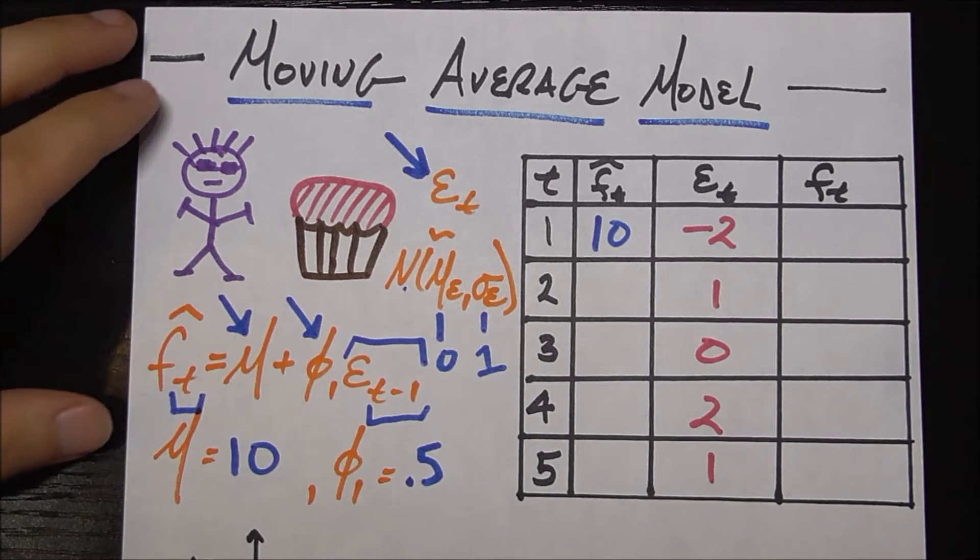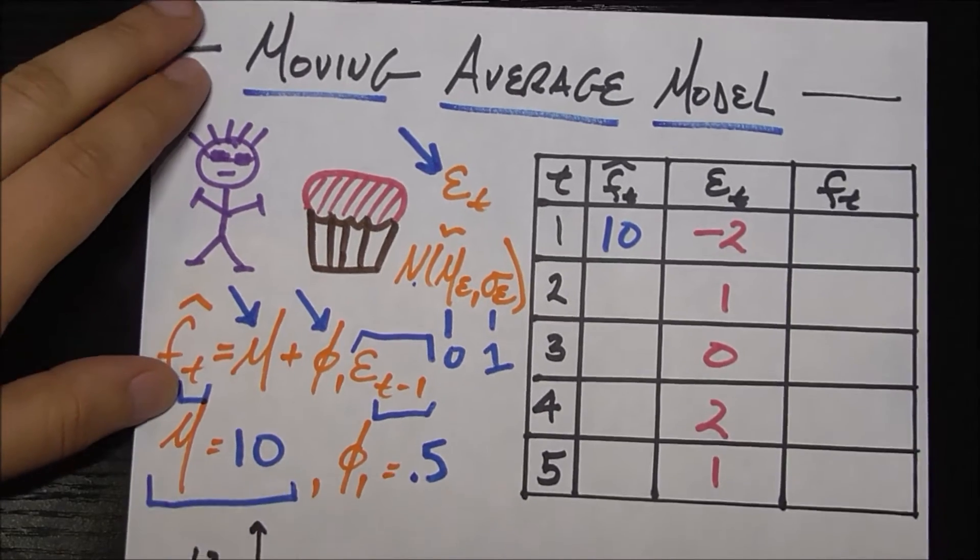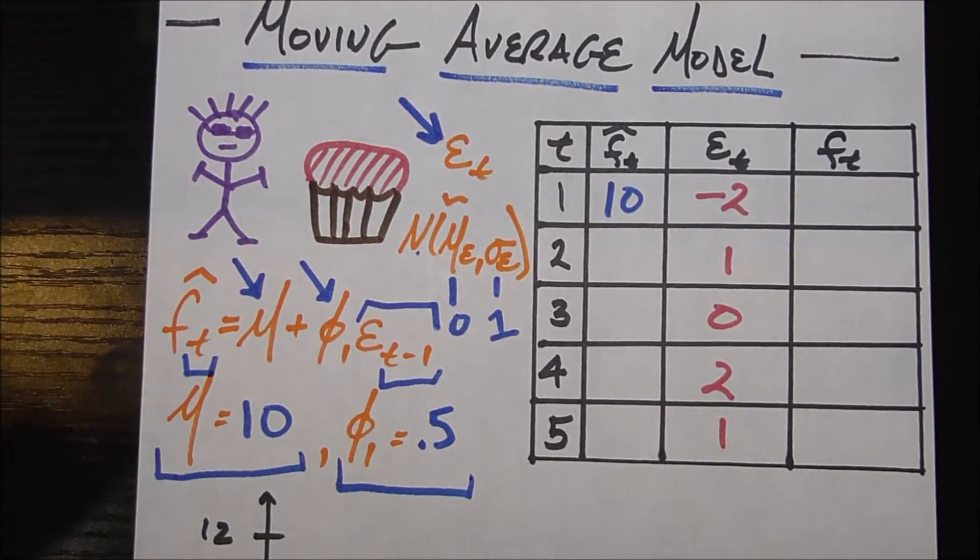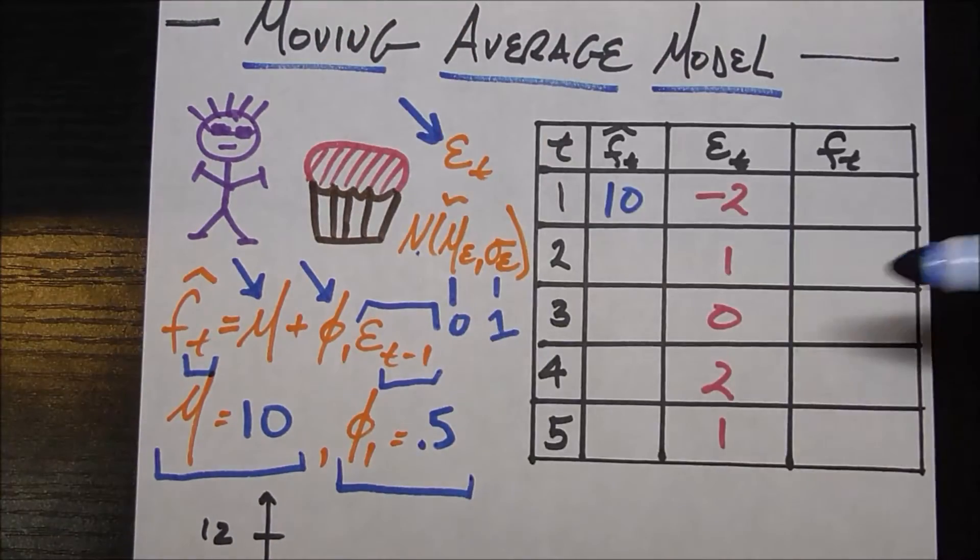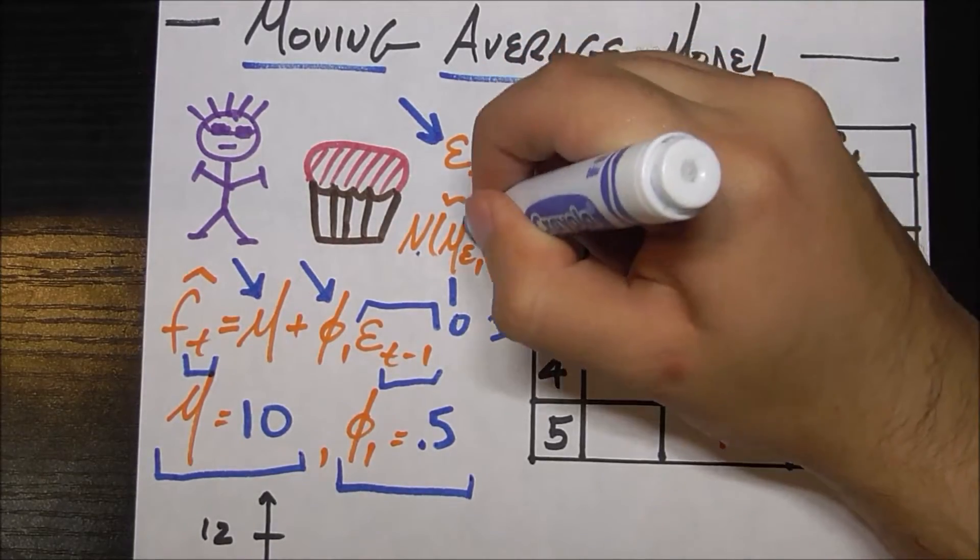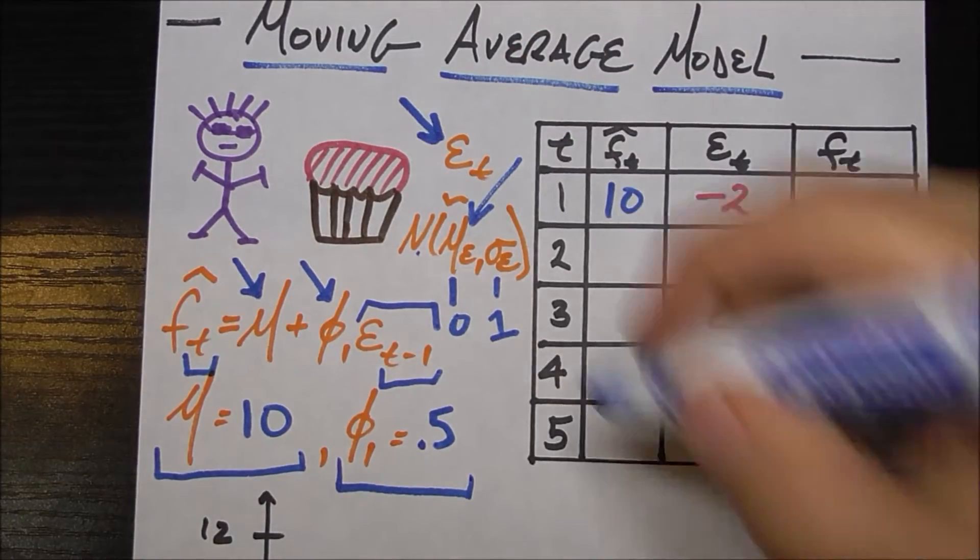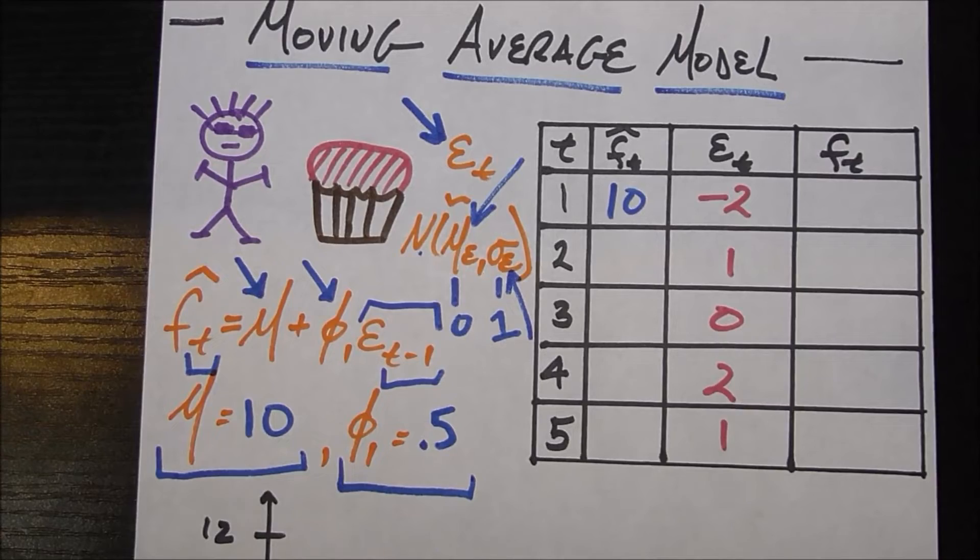So to just reiterate, the four parameters in this moving average model are mu, your baseline number of cupcakes; phi sub 1, which is the multiplying factor of previous month's error; mu sub e, which is the mean of the error; and sigma sub e, which is the standard deviation of the error.